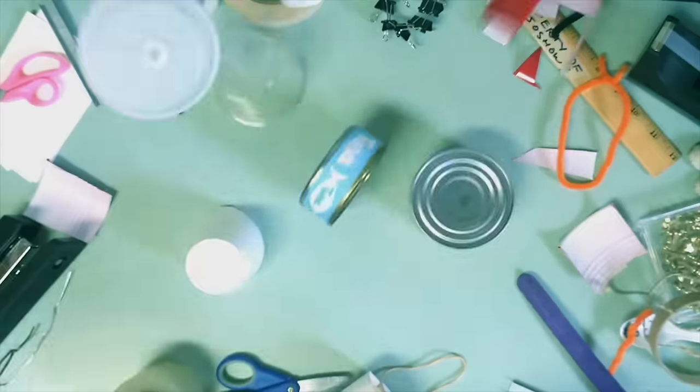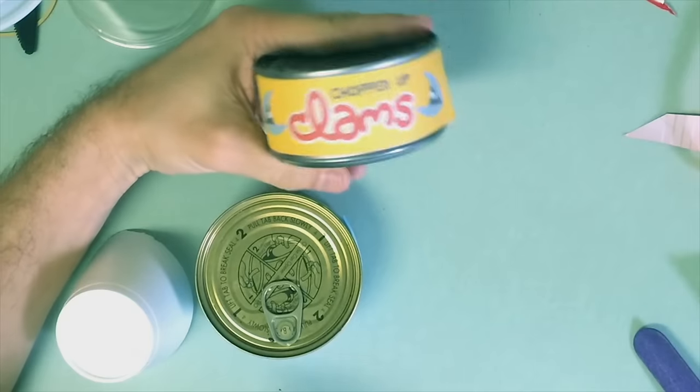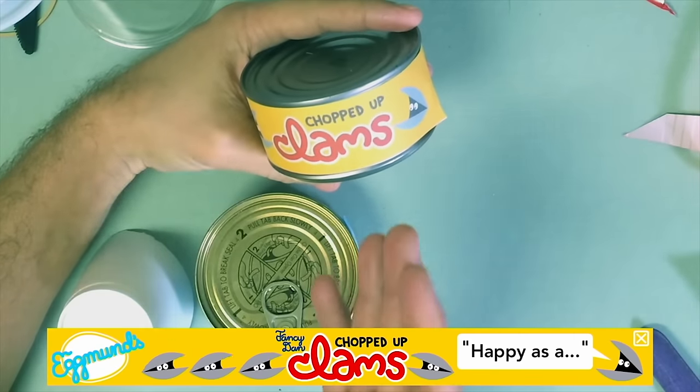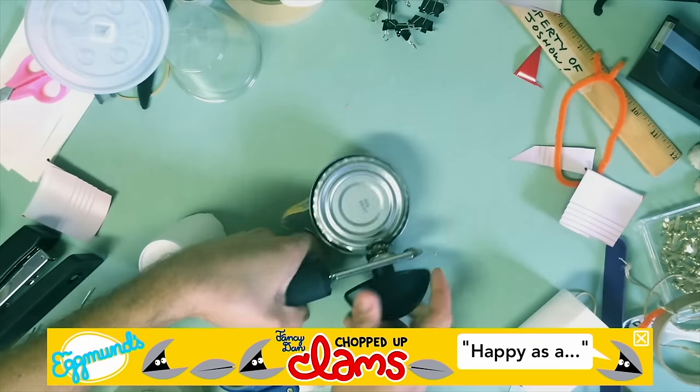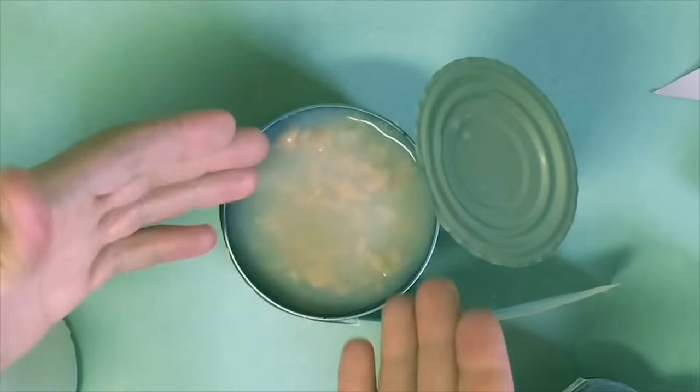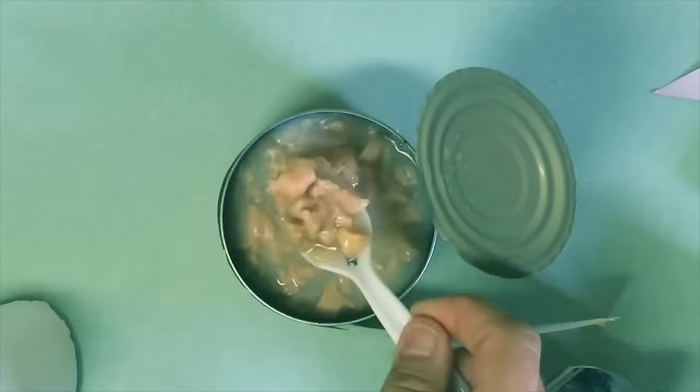And now for the cans. We got Eggman's premium chopped up clams. These are some of Josh-O Jr.'s favorites here. I hate clams. Oh, look at that. I can't resist. I've got to have a taste. Those are five years old. Oh, we're going to skip that.